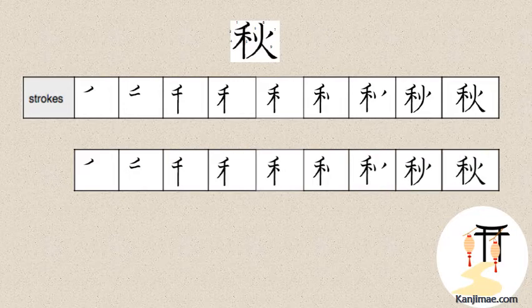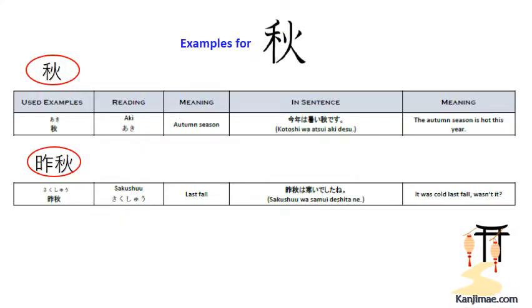Now let's see stroke orders and examples. There are two examples: first, Aki itself meaning autumn season; second, Sakushu meaning last fall. Please check the sentences given on the screen.